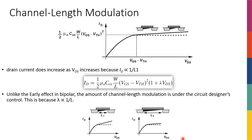What does it mean and how is it going to affect our current expression? Basically, as VD increases, the pinch-off point goes from close to the drain to some point that is closer to the source. And if I increase VD, this point is going to move to the left more and more. So if the entire channel length is called L, the part that actually has charges I'm going to call L_effective.